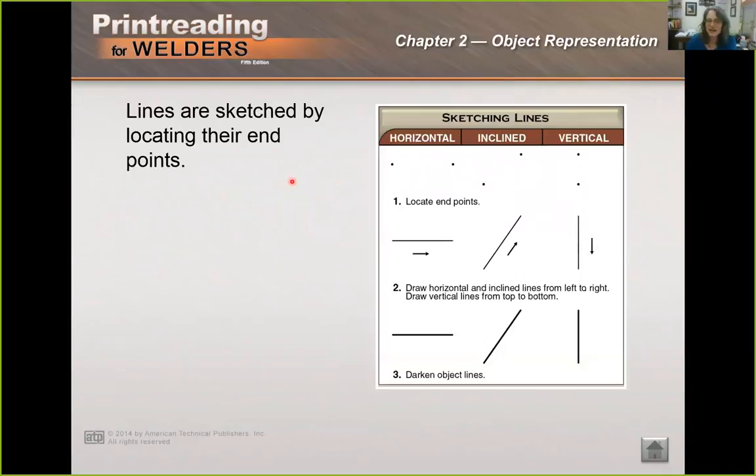Now lines are sketched. There's actually a technique to this. You sketch a line by first locating the end points and then you start at this end point and you look at the other end point and sketch right to it. You go from left to right and from left to right and top to bottom or straight down. You don't want to push your pencil up against the paper. You want to pull it down and if you're left handed this might change but in general you don't want to be pushing your pencil. You really want to be pulling it.